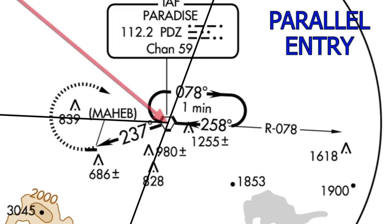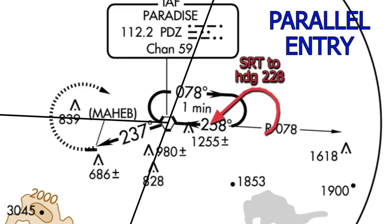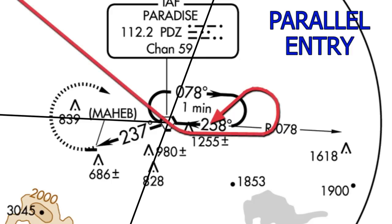If we are coming from the second area to the Paradise VOR, we will do a parallel entry. We fly to the Paradise VOR IAF, and once we overfly it, we turn to a heading of 078. We fly that heading for one minute, then do a left standard rate turn to a heading of 228 until we intercept a heading of 258 to the Paradise VOR. Once we intercept that heading, we overfly the Paradise VOR on 258 and are in position to do the rest of the approach.